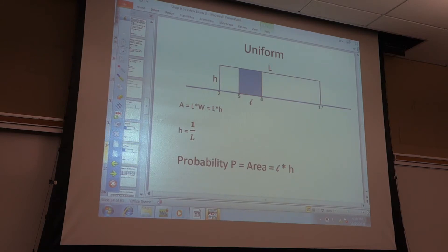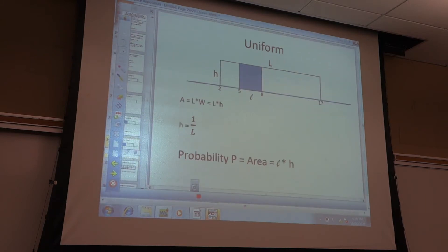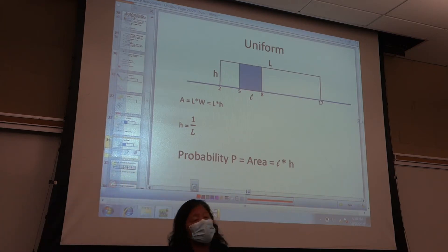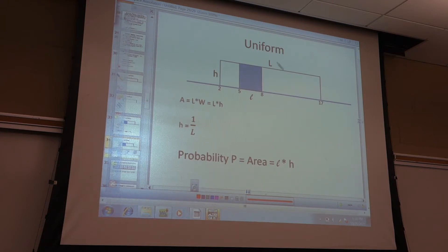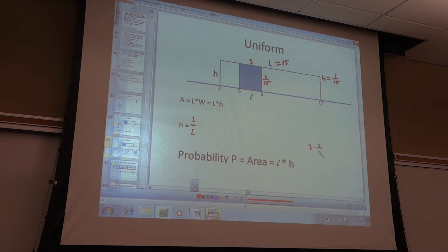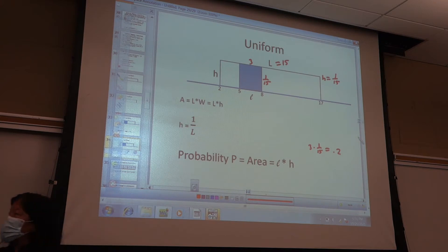You can throw in little numbers to give yourself practice. For example, from 2 to 17, the big L is 15, so h equals 1 over 15. If the little l is 3, then the probability is 3 times 1/15, which is 0.2. Those are basically all the things you need to know about uniform.